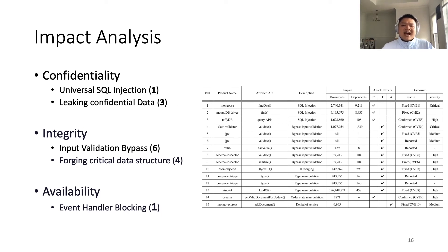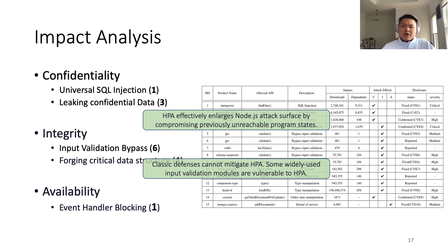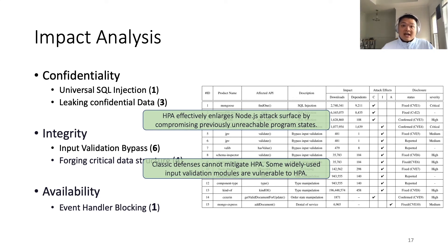How impactful are the detected vulnerabilities? We found that HPA can introduce various attack effects such as leaking credential data, bypassing security checks, or denial of service. The first insight is that hidden property abusing effectively enlarged Node.js attack surfaces because we compromised previously unreachable program states. Second, classic defenses are not mitigating HPA — in fact, some widely used input validation modules are themselves vulnerable to HPA.